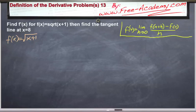We need to find the derivative of f(x) equals the square root of x plus 1, and then we'll find the tangent line at x equals 8.